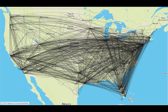In this week's Tableau Tip Tuesday, I'm going to show you how to use Tableau's new MakePoint and MakeLine functions in order to build directional maps. This example is showing each airport and every route that goes out of that airport. I'm going to show you how to build this using those two functions.